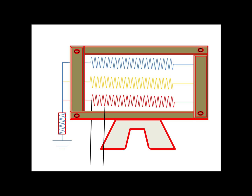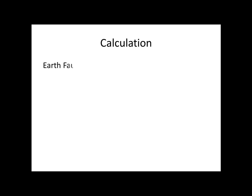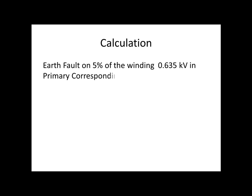In this section, we are going to see the remaining 5% protection. This protection is used to protect winding from the neutral side, specially up to 10 to 20% from the neutral. But theoretically, we are using 5%. Let us consider the earth fault on 5% of the winding. Due to that, we get voltage across NGT of 0.635kV in primary. Correspondingly, the secondary voltage is only 6.92V. This is ideal condition only.